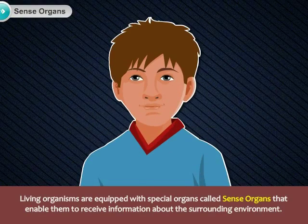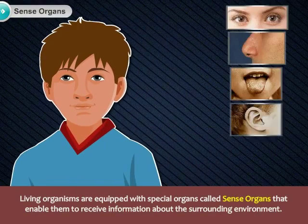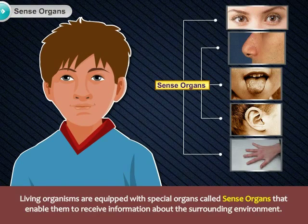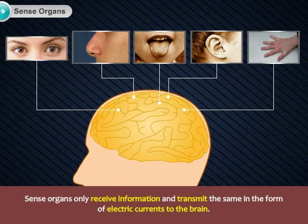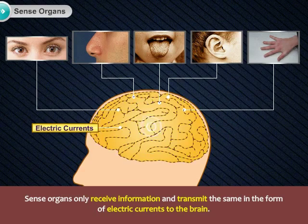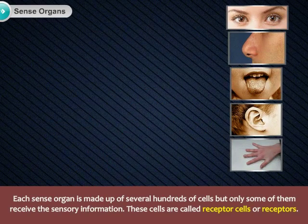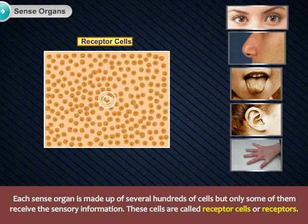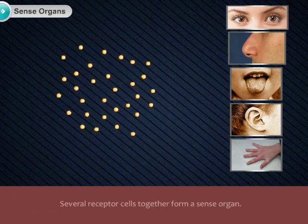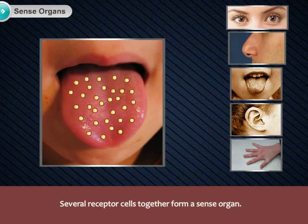Living organisms are equipped with special organs called sense organs that enable them to receive information about the surrounding environment. Sense organs only receive information and transmit it in the form of electric currents to the brain. Each sense organ is made up of several hundreds of cells, but only some of them receive the sensory information. These cells are called receptor cells or receptors. Several receptor cells together form a sense organ.